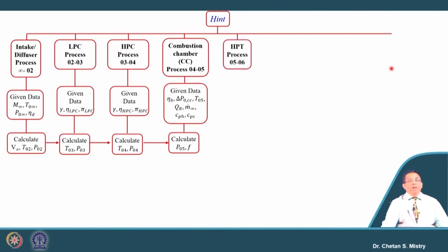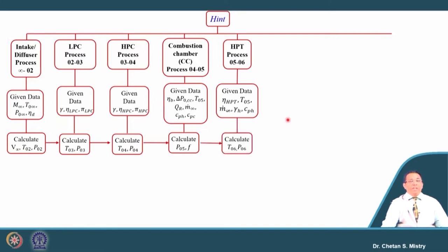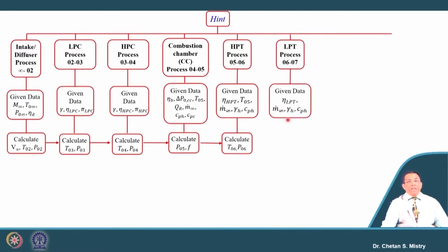For the combustion chamber, burner efficiency, pressure drop, and maximum turbine entry temperature are known, so we can calculate the exit pressure and the amount of fuel required to raise the temperature to the turbine entry temperature. For the HP turbine, which drives the HP compressor, using the work balance we can calculate the outlet pressure and temperature. Similarly for the LP turbine, which drives the LP compressor, using isentropic efficiency and the work balance we calculate exit pressure and temperature.